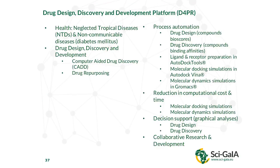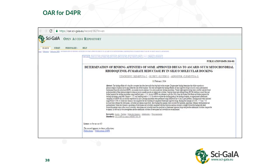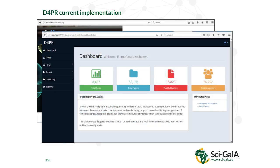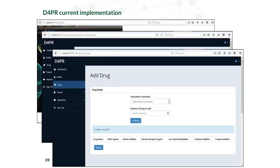Another application is a drug discovery and development platform — a science gateway to gather applications for drug discovery. It interacts with the open access repository and also integrates scientific applications like GROMACS, Vina, and AutoDock. They are using the open access repository to store documents and data and the Future Gateway to run the applications on their local cluster. The portal is being developed with a dashboard where users can add drugs and manage all data.